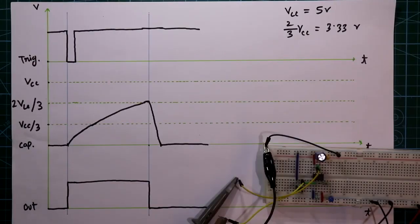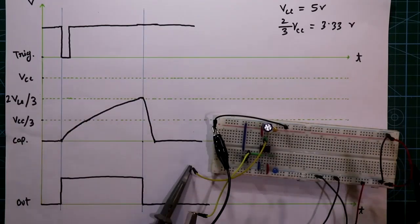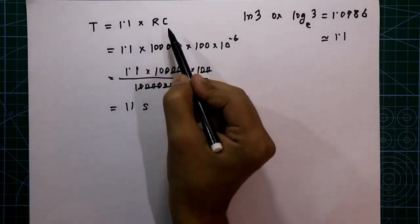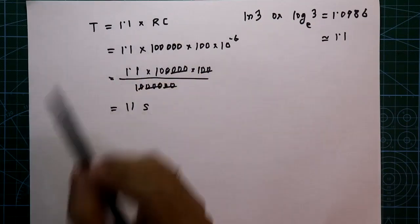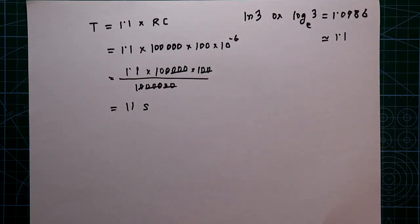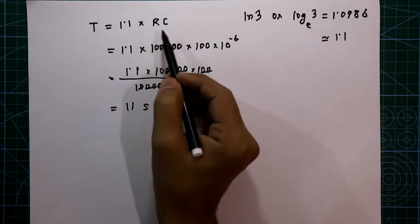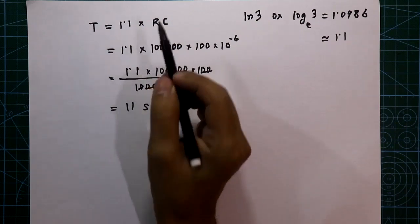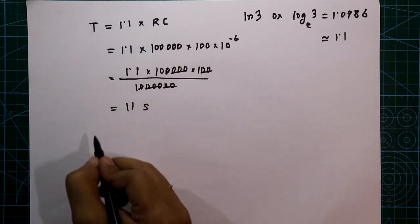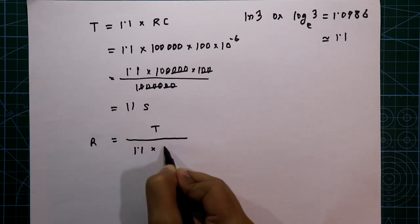If you change any component value, the time will change. It is easy to keep the capacitor value constant and vary the resistor using a potentiometer to get your required timer. The rearranged formula is R = T / (1.1 × C).